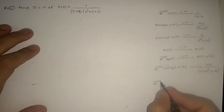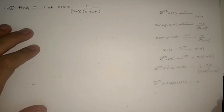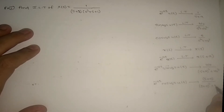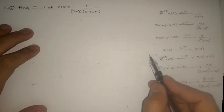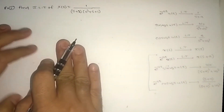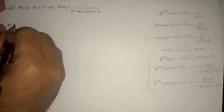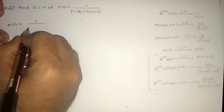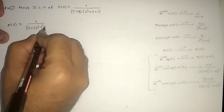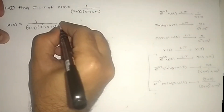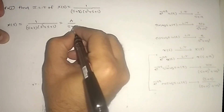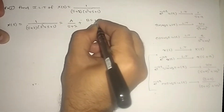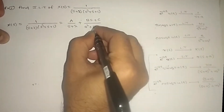Similarly, e^(−at)·cos(ω₀t)·u(t): wherever s appears we replace by (s+a), giving (s+a)/[(s+a)²+ω₀²]. We will use these formulas to solve this problem. Using partial fractions: 1/[(s+2)(s²+s+1)] = A/(s+2) + (Bs+C)/(s²+s+1).